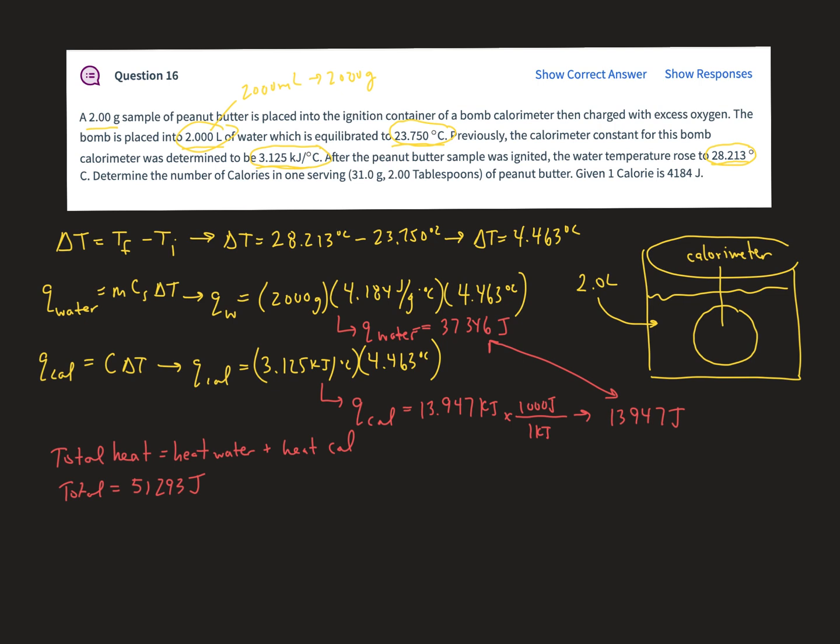So I add those together. My total is going to add together the 37,000 and the 13,000 to get my total heat of approximately 51,293 joules. And that is per two grams of peanut butter. So I would divide that. So 51,293 divided by two, that's going to give me joules per gram. So I'm going to have approximately 25,646.5 joules per gram.